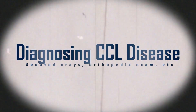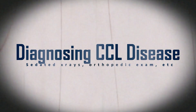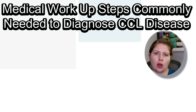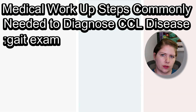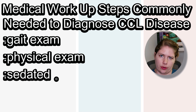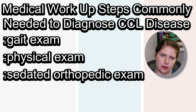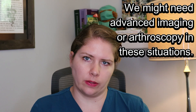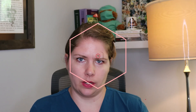Let's cover how we diagnose cranial cruciate ligament disease. A complete tear is usually pretty easy to diagnose. We use a combination of a gait exam, a physical exam, a sedated orthopedic exam, and sedated x-rays. Partial tears can be a lot more challenging to diagnose.